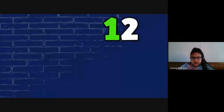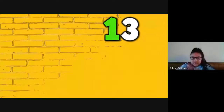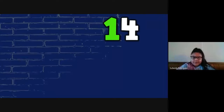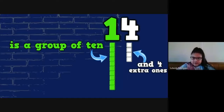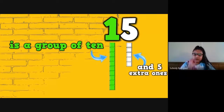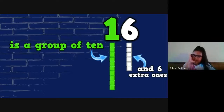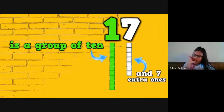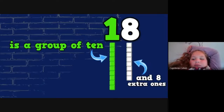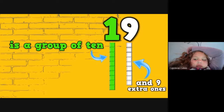11 is a group of 10 and 1 extra one. 12 is a group of 10 and 2 extra ones. 13 is a group of 10 and 3 extra ones. 14 is a group of 10 and 4 extra ones. 15 is a group of 10 and 5 extra ones. 16 is a group of 10 and 6 extra ones. 17 is a group of 10 and 7 extra ones. 18 is a group of 10 and 8 extra ones. 19 is a group of 10 and 9 extra ones.